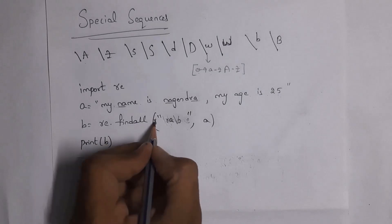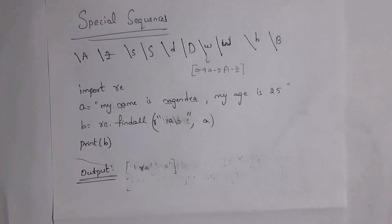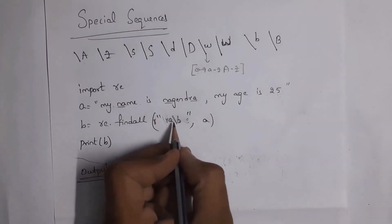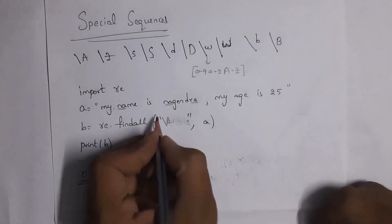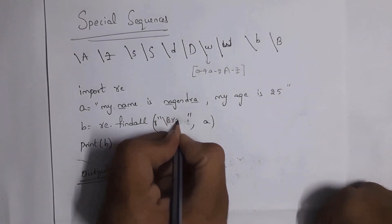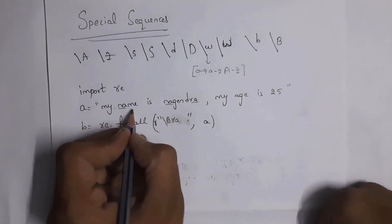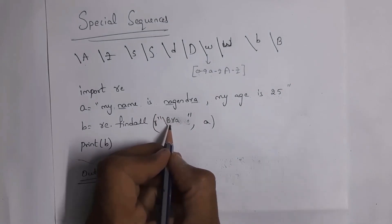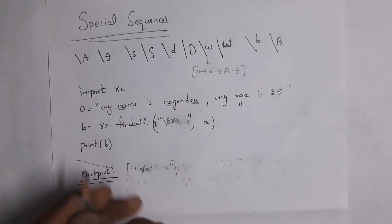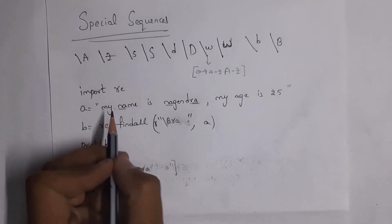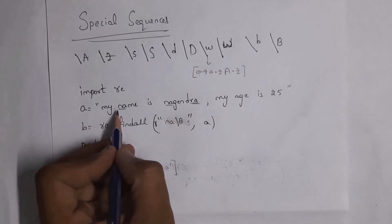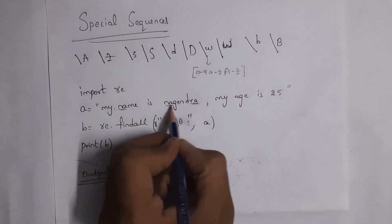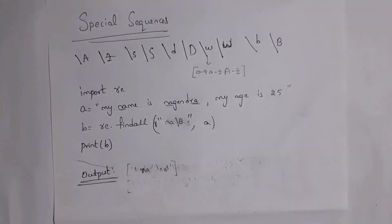Next I'll explain `\B` (backslash capital B), which is opposite to `\b`. When you write `\B` before a pattern, it searches for characters that are NOT at a word boundary. For example, `r'\Bra'` checks whether 'ra' is available not at a word boundary — and 'ra' inside 'nagendra' qualifies, so it prints `['ra']`. Similarly, `r'na\B'` checks whether 'na' appears at the start of a word: 'name' and 'nagendra' both start with 'na', giving output `['na', 'na']`. These are the various special sequences used in regular expressions.